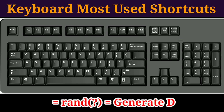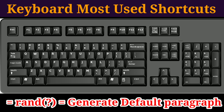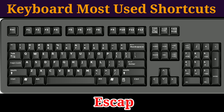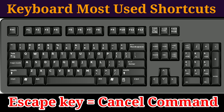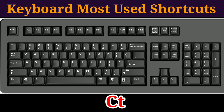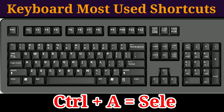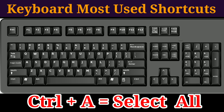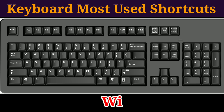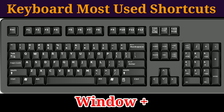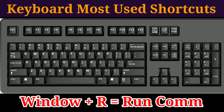Next, equals rand open bracket close bracket to generate a default paragraph — koi bhi data likhne ke liye isko press kijiye. Escape key for cancel command — like agar print kar rahe hain toh isko cancel karna chahte hain toh Escape press kijiye. Next, Ctrl plus A for select all — all data ko select karne ke liye.